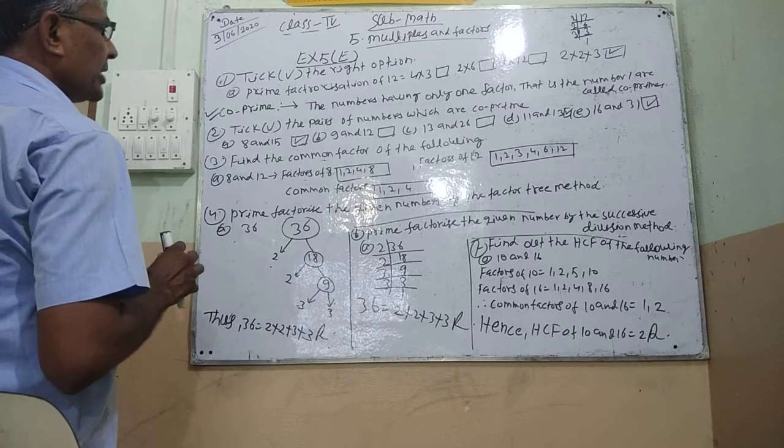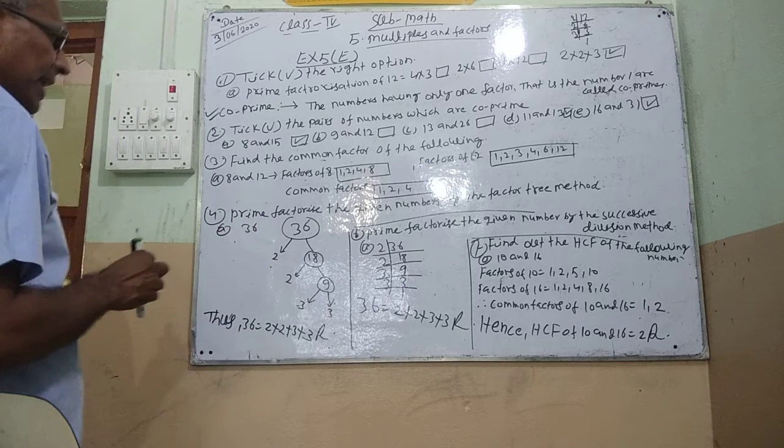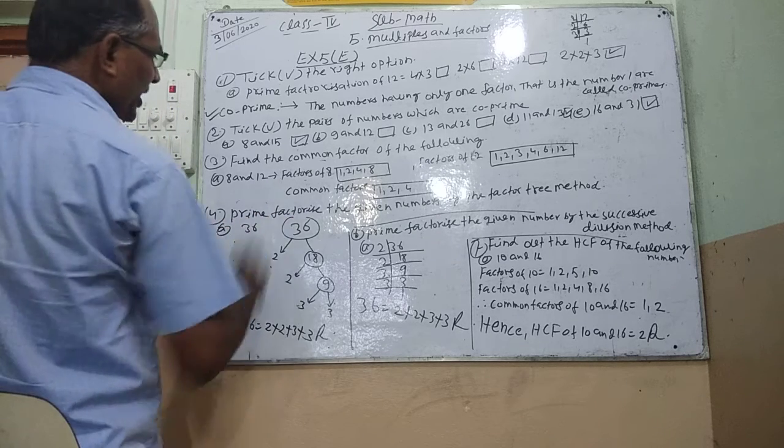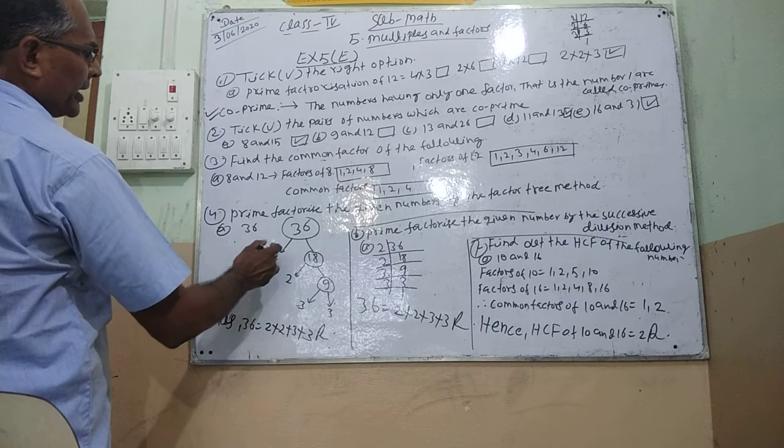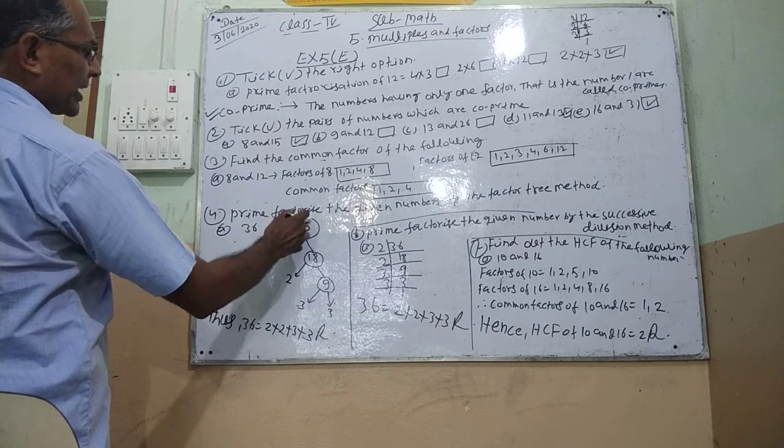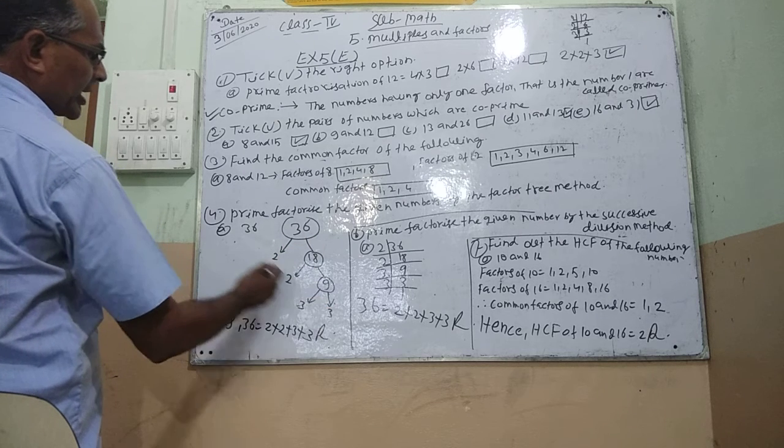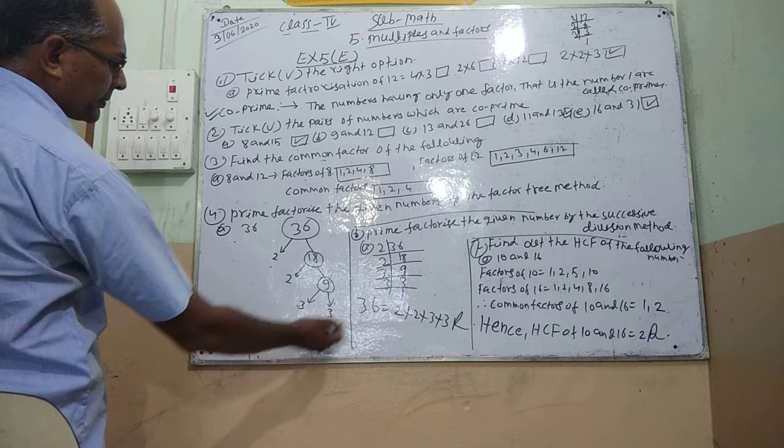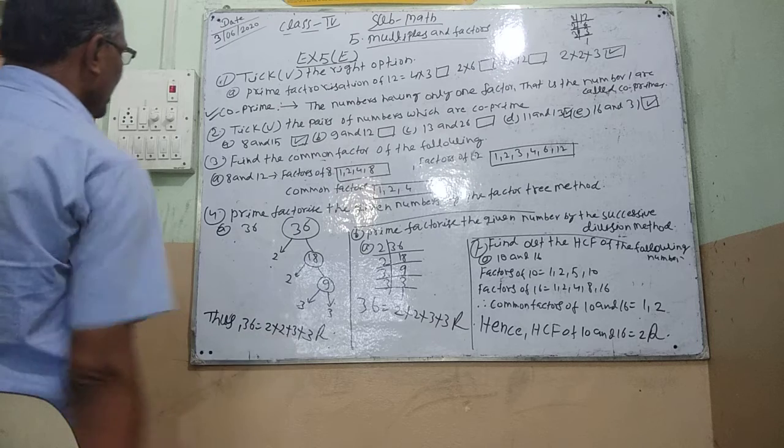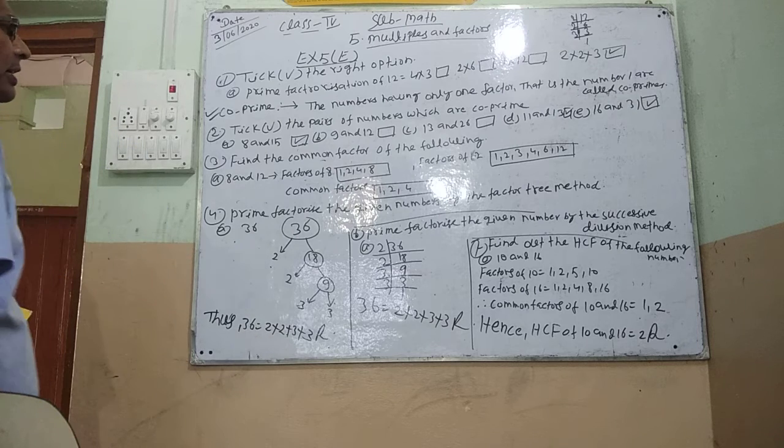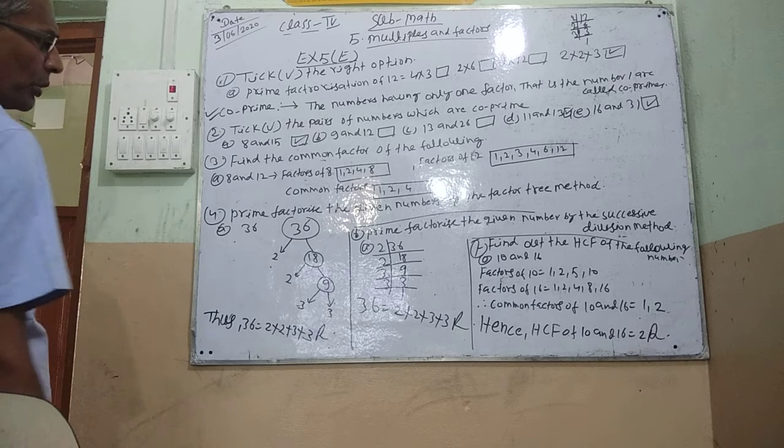Now, we have to write the given number by the factor tree method. 36 divided by 2 is 18. 2, 3, 3. So 2, 2, 3, 3. This is the factor tree method.